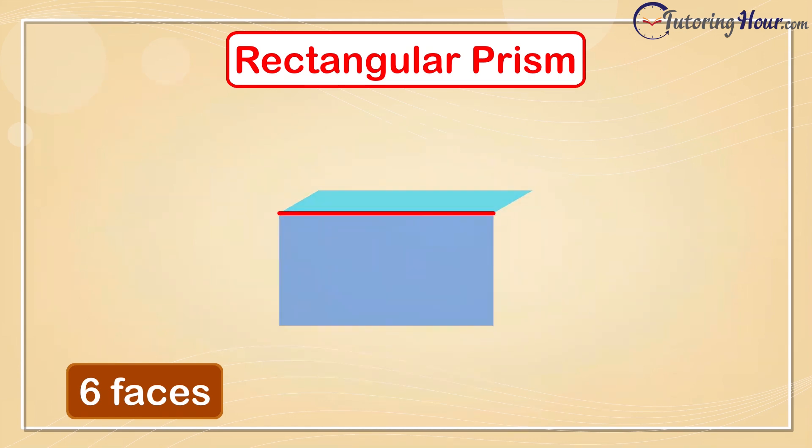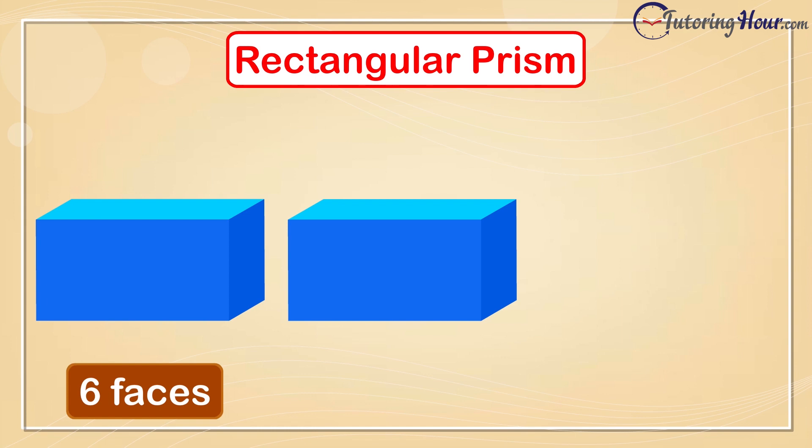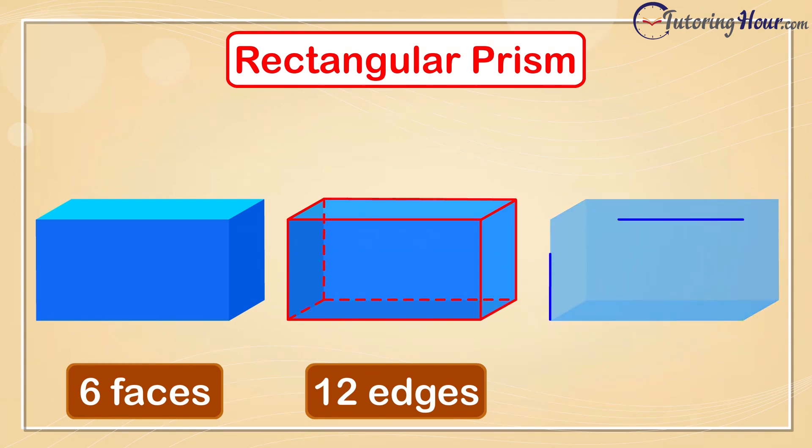The lines where two faces meet are called edges. Let's figure out the number of edges in a rectangular prism. Counting them: 1, 2, 3, 4, 5, 6, 7, 8, 9, 10, 11, 12 edges. The point where two edges meet is called a corner, or vertex.